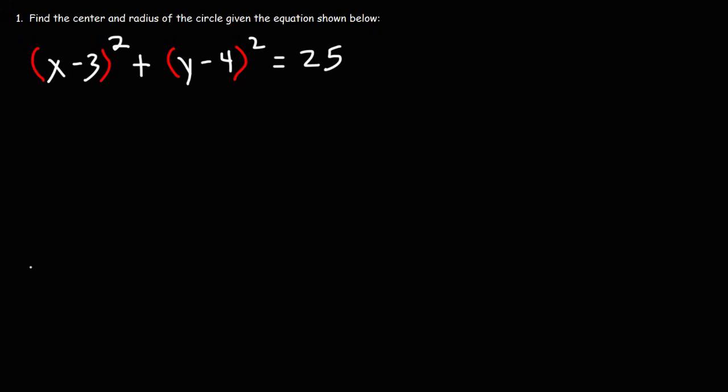So the first thing you need to be familiar with is the standard form for the equation of a circle. It's (x - h)² + (y - k)² = r². Now, the center of the circle can be found by this equation. All you need to do is identify the values of h and k. And the radius of the circle is simply r.